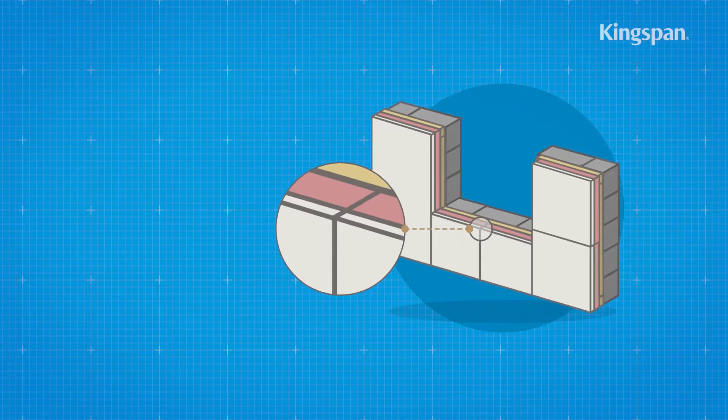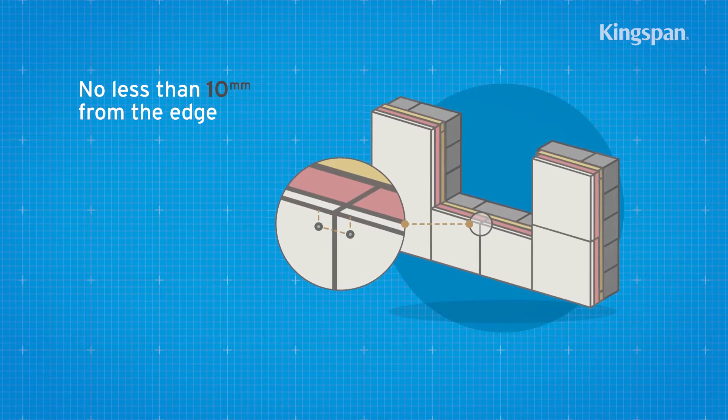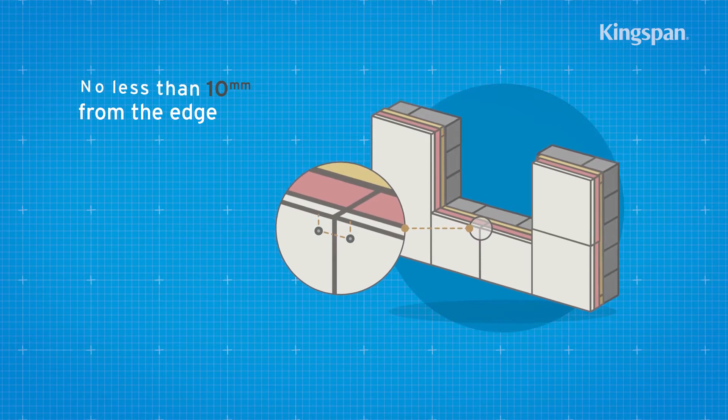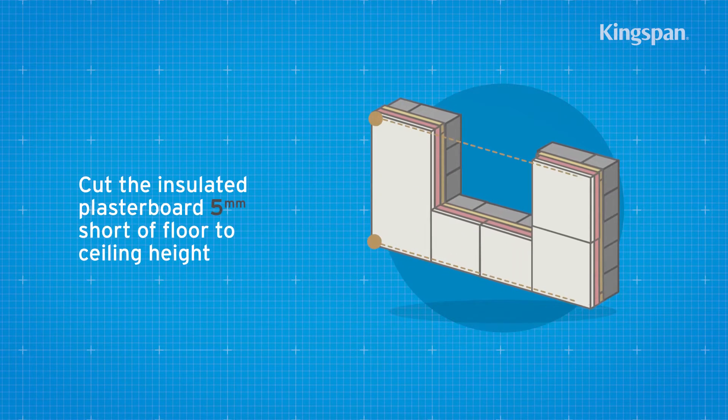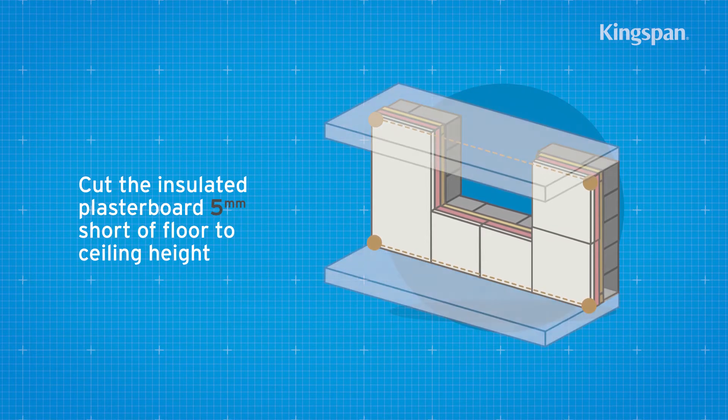Ensure each sheet is lightly butted with fixings located no less than 10mm from the bound edges of the sheet. Cut the insulated plasterboard approximately 5mm short of the floor to ceiling height.